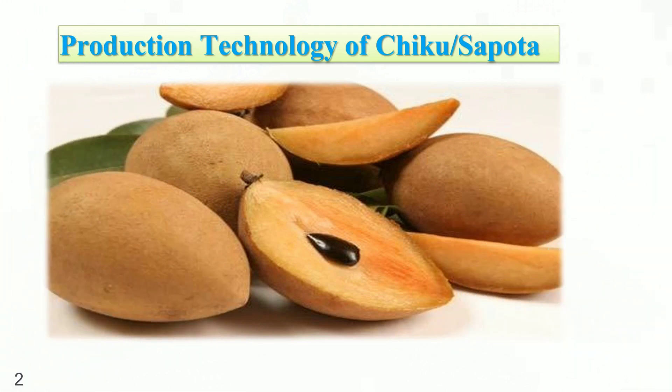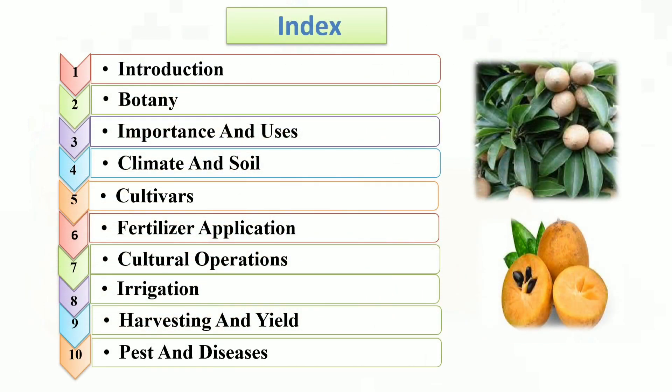The topic of my presentation is Production Technology of Spotter. Starting with the Index: Introduction, Botany, Importance and Uses, Climate and Soil, Cultivars, Fertilizer Application, Cultural Operations, Irrigation, Harvesting and Yield, and Pests and Diseases.